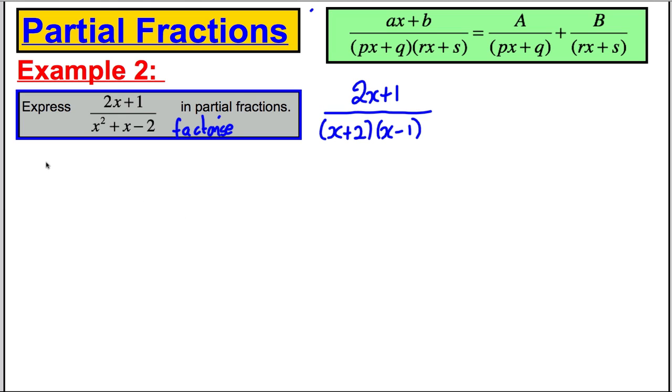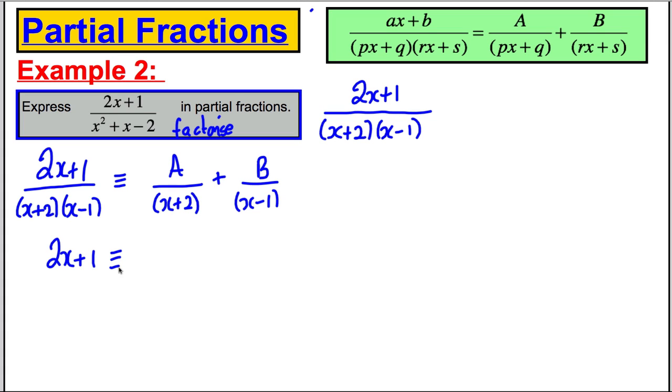Let's have a go at this question. We know this is linear on top, quadratic on bottom, two distinct linear factors on bottom, so we can use the partial fractions rule. We can say that 2x plus 1 over (x+2)(x-1) must be identical to some number over the first factor (x+2) plus some other number over the second factor (x-1). We know if we cross multiplied and equated, we could actually jump a line and say therefore that 2x plus 1 must be identical to A multiplied by (x-1) plus B multiplied by (x+2).